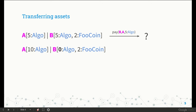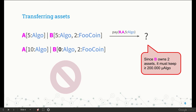But let's assume that B wants to transfer five Algos to A. Is it possible? Intuitively, yes, and we would reach a state where A has ten Algos while B has zero Algos. But that's not right. This transaction fails because Algorand imposes a constraint on accounts: since this account holds FooCoin, the balance of Algos in this account cannot become smaller than a certain threshold. So this transaction fails.